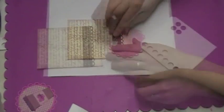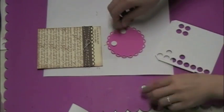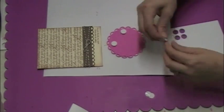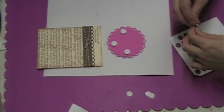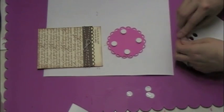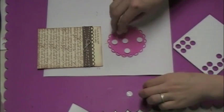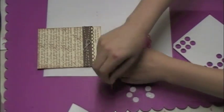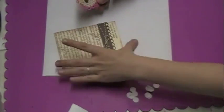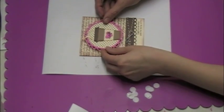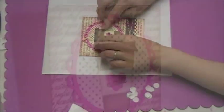So I'm just pressing that down really well and the only thing left to do is I'm just using some pop dots on the back of my lacy circle and I'm just gonna stick that down to my card and that is a wrap. So here we go sticking it down and we are done.